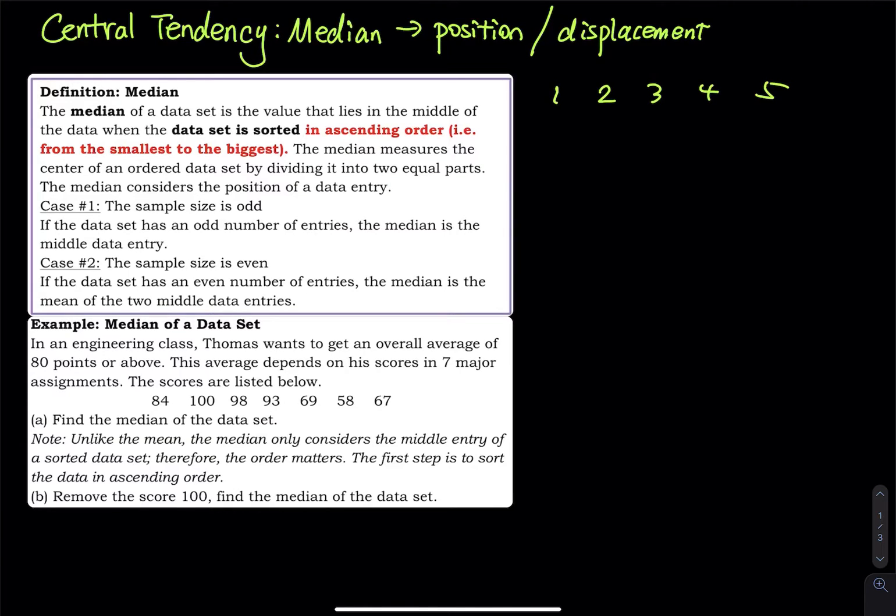So when the sample size is odd, the number right in the middle of the data set is median. So this is median. The median cuts the data into two equal pieces. We have two numbers on the left and two numbers on the right.